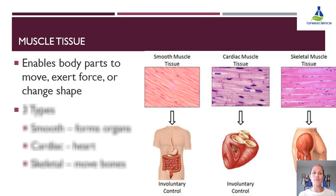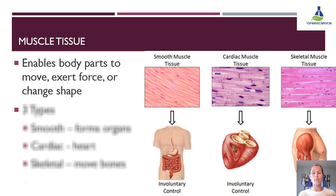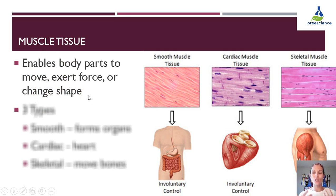Muscle tissue is the third type of tissue we'll look at. Its main function is to allow body parts to move, exert forces, or to change shape. By moving, you might move your arm or your leg. Exerting a force might mean pushing something or moving something like your heart as it pumps blood, or your intestines keeping food moving through. Or muscles may need to change shape — to make you smile or make you blink.